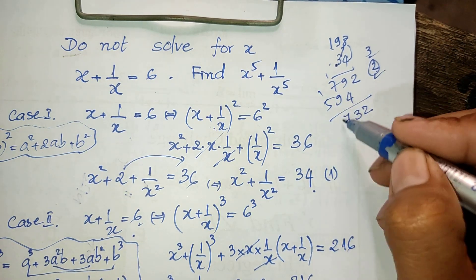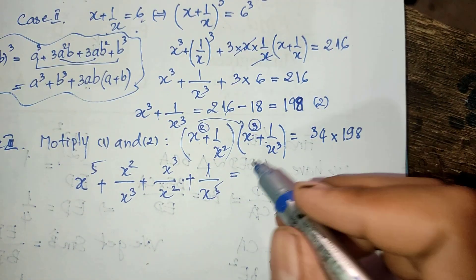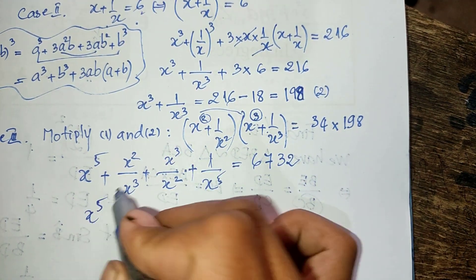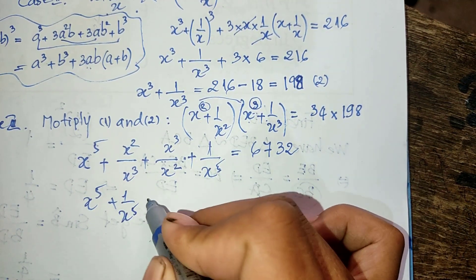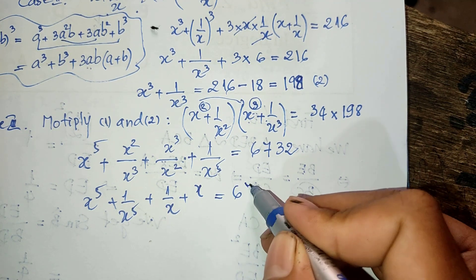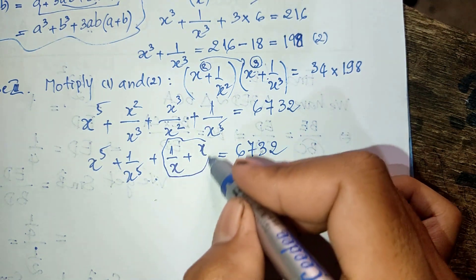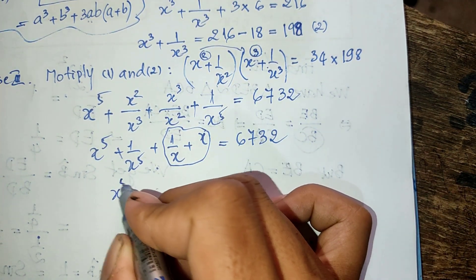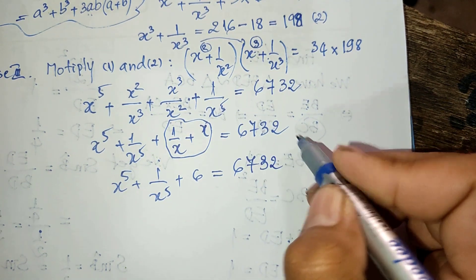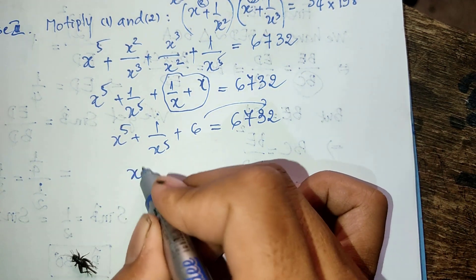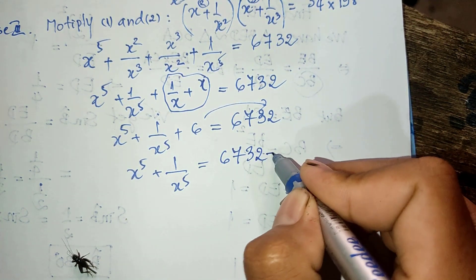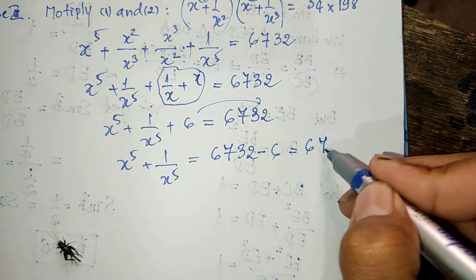We get the product equals 6732. Simplifying, we get h to the power five plus one divided by h to the power five plus h plus one divided by h equals 6732. Since h plus one divided by h equals six, we get h to the power five plus one divided by h to the power five plus six equals 6732. Moving six from the left-hand side to the right-hand side, h to the power five plus one divided by h to the power five equals 6732 minus six, which equals 6726.